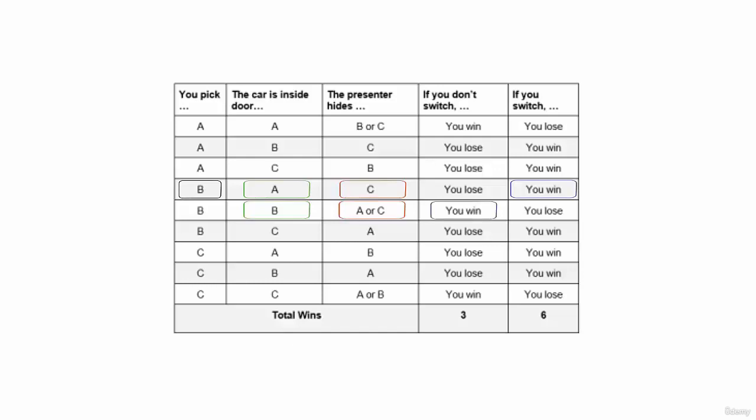Lastly, if the car is inside door C, the presenter will hide door A because it will have a goat. And you win only if you switch.